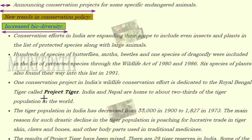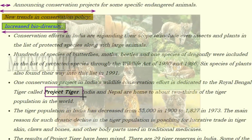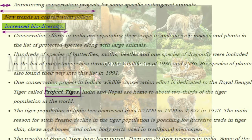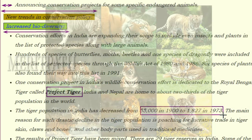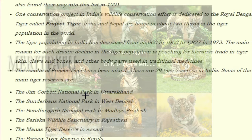One major conservation project is Project Tiger, dedicated to the royal Bengal tiger. India and Nepal are home to about two-thirds of the world's tiger population. The tiger population in India decreased from 55,000 in 1900 to 1,827 in 1973. The main reason for this drastic decline is poaching for the lucrative trade in tiger skin, bones, and other body parts used in traditional medicines.